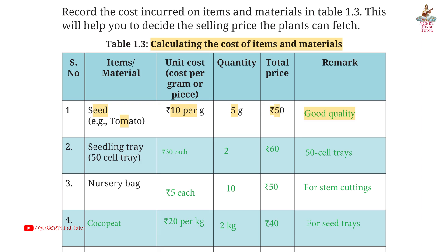Second: seedling tray (50-cell tray). Unit cost: Rs. 30 each. Quantity: 2. Total price: Rs. 60. Remark: 50-cell trays.